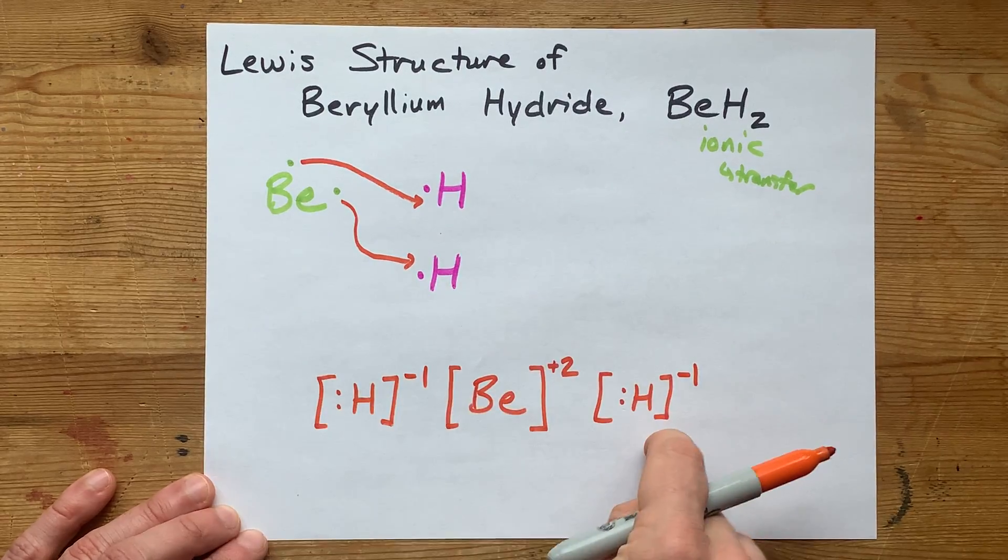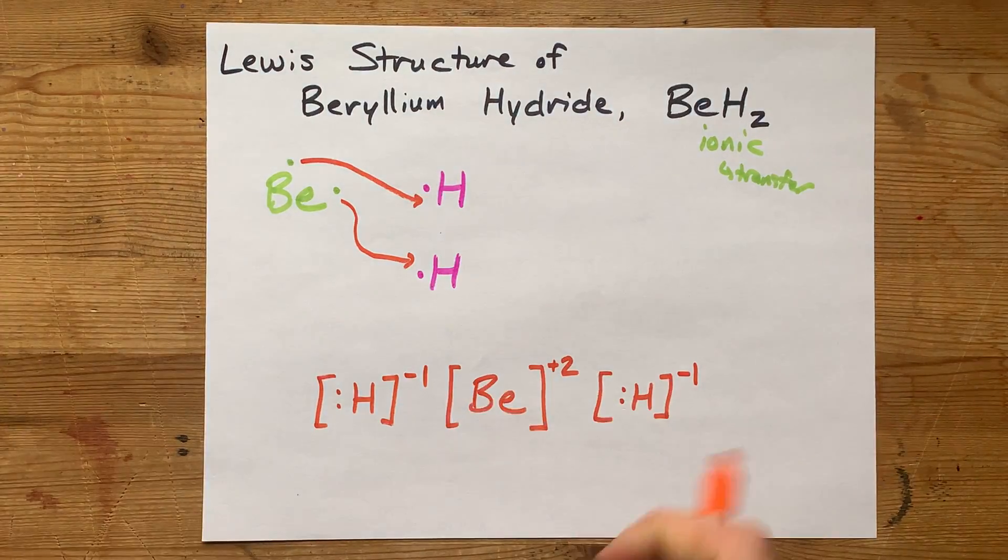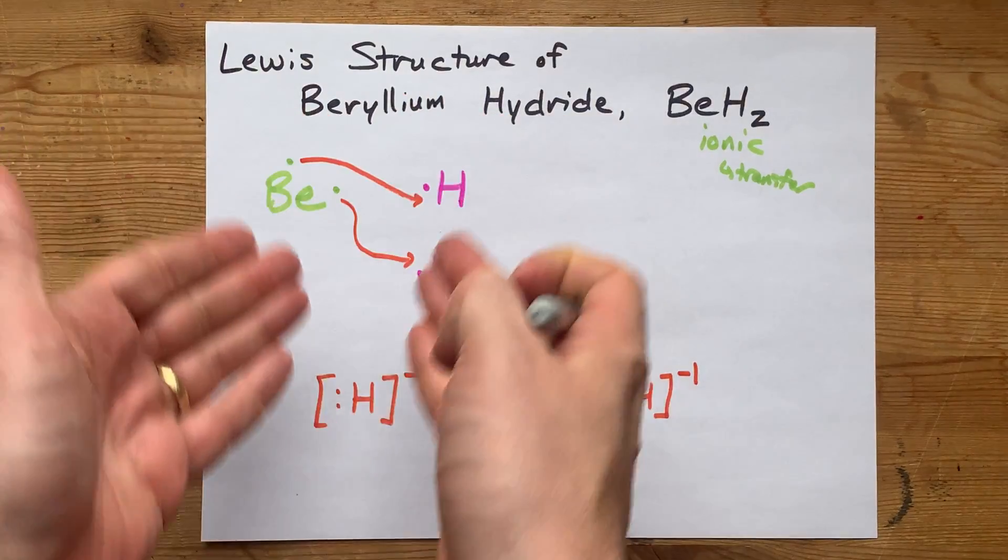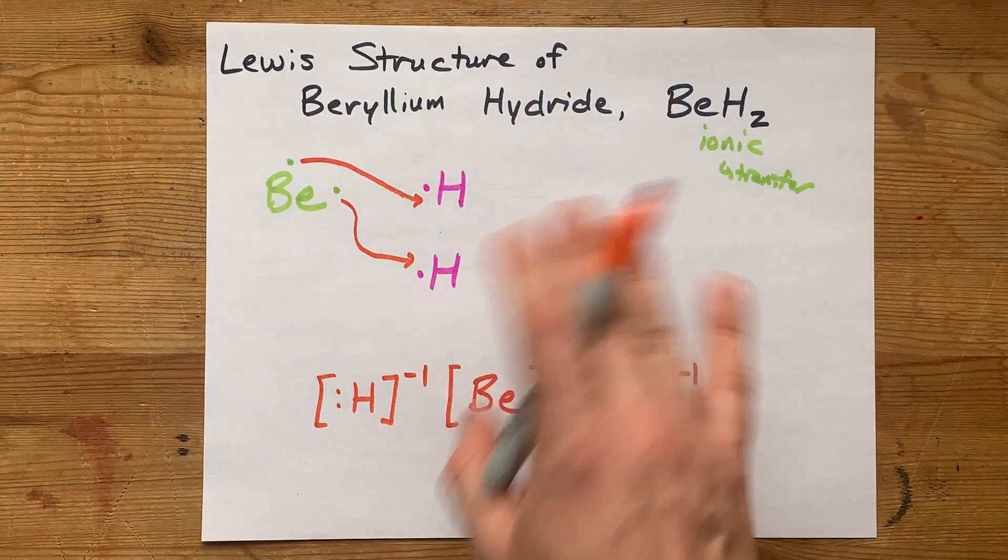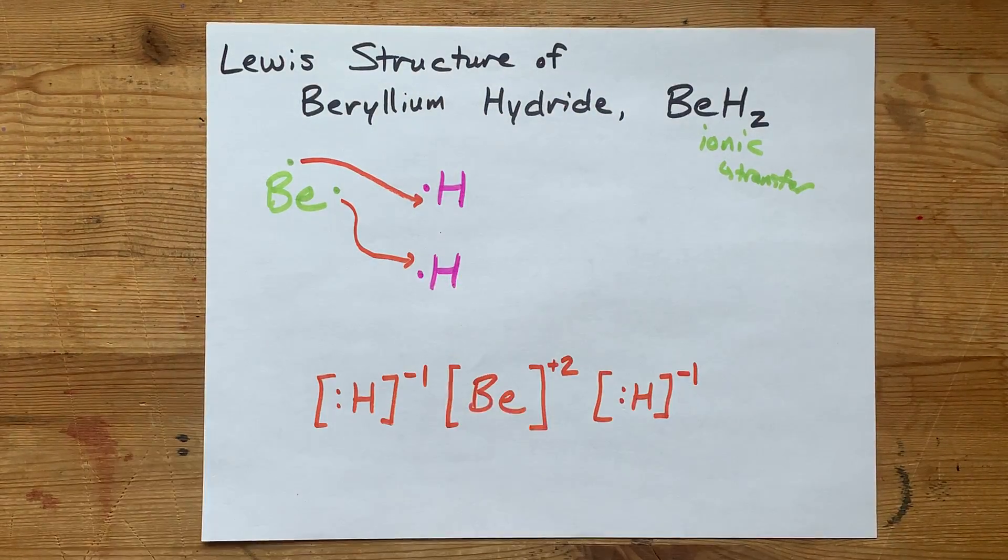So this is the complete Lewis structure for beryllium hydride. This here is showing you how it happened. Thanks for sticking with me there, and best of luck.